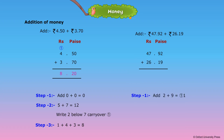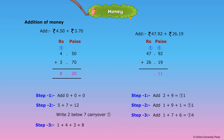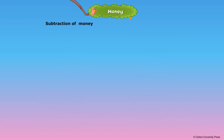Carry over 1. Step 2: Add 2 plus 9 equal to 11, carry over 1. Step 2: Add 1 plus 9 plus 1, that's equal to 11, carry over 1. Step 3: Add 1 plus 7 plus 6, that's equal to 14, carry over 1. Step 4: Add 1 plus 7 plus 6 plus 2, that's equal to 7.